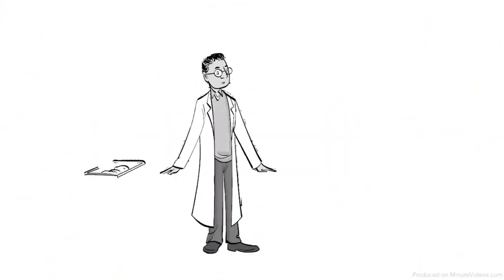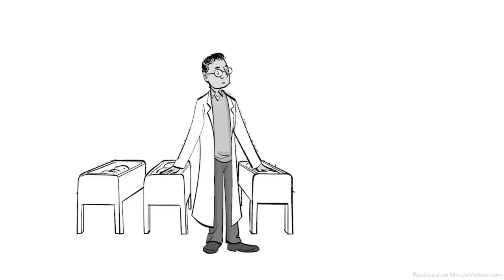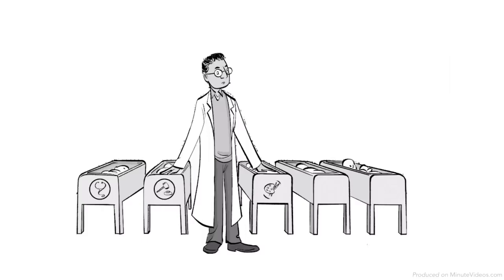John B. Watson famously claimed that if he were to be given a dozen healthy infants, he could shape them into anything – doctors, lawyers, artists, beggars or thieves – regardless of their background or genetic predispositions.